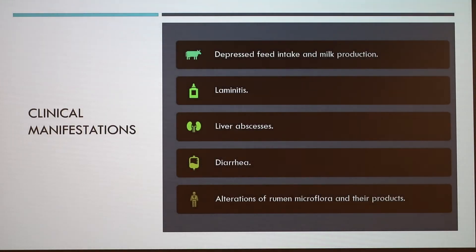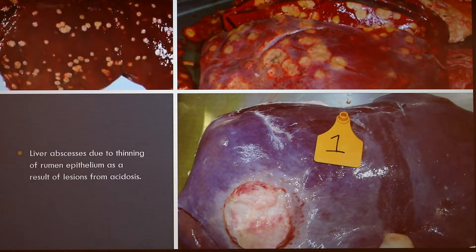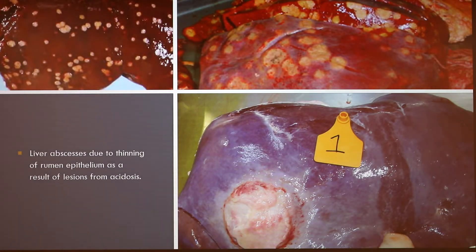The clinical manifestations of paracarotosis in cattle include depressed feed intake and milk production, laminitis, liver abscesses, diarrhea, and extensive alterations of rumen microflora populations and their fermentation products. As seen in these photos, these are mainly beef cattle livers showing abscesses.